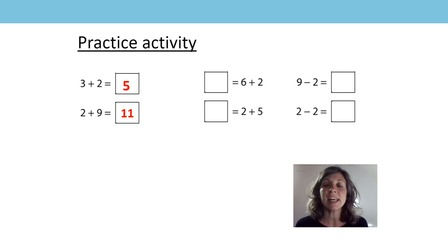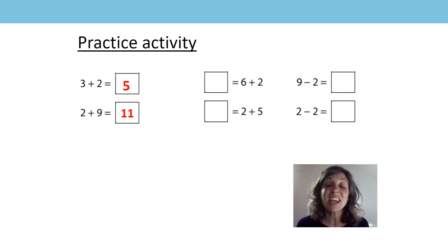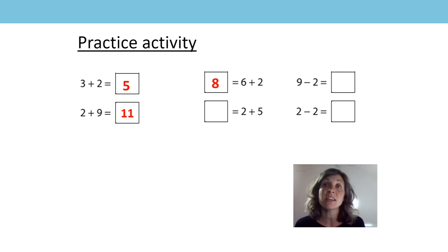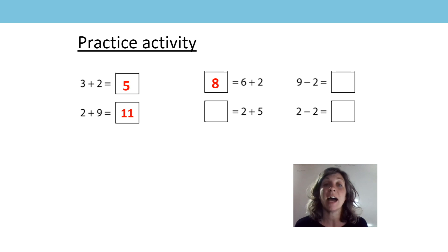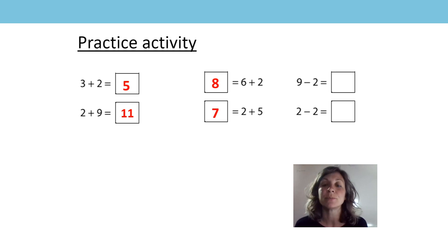Now I've got an even number, so when I add 2 to an even number it gives the next even number, so 6 plus 2, the next even number would be 8. 8 is equal to 6 plus 2. I've got an odd number again and I'm going to switch the order of the addends, so I've got 5 plus 2 and the next odd number after 5 is 7.